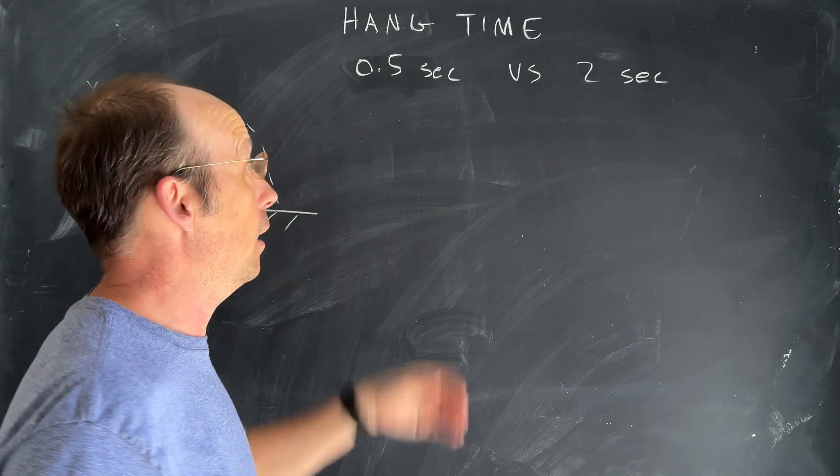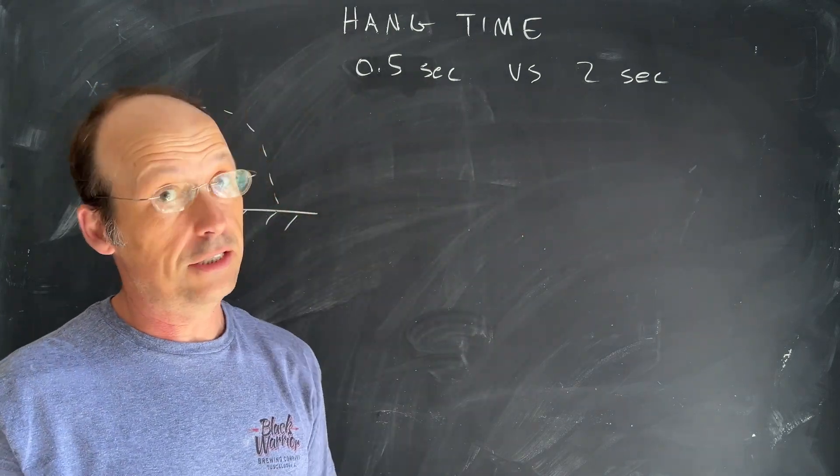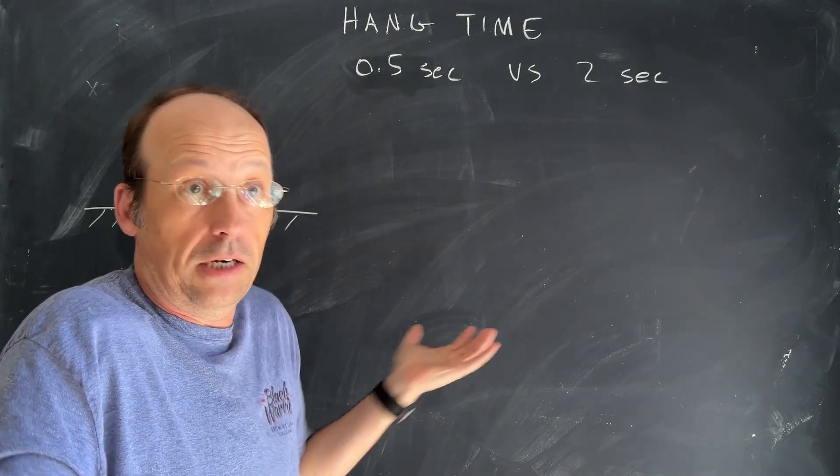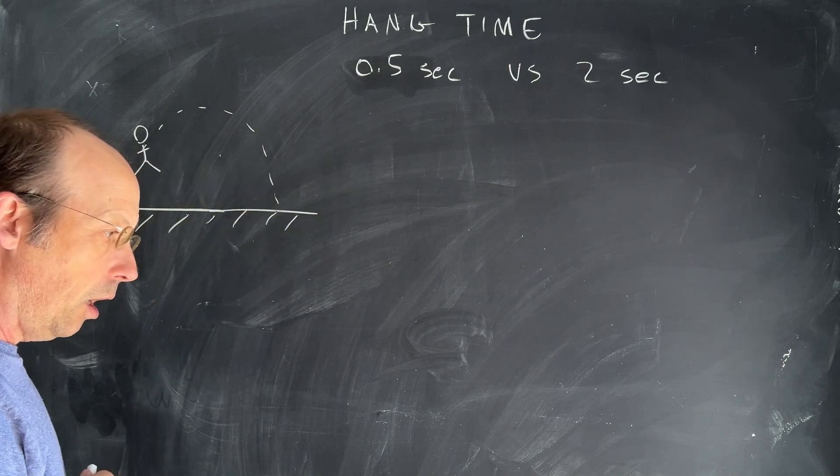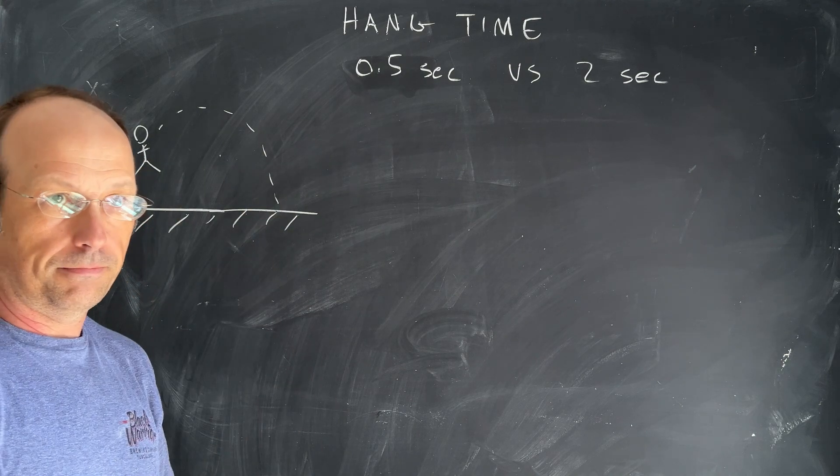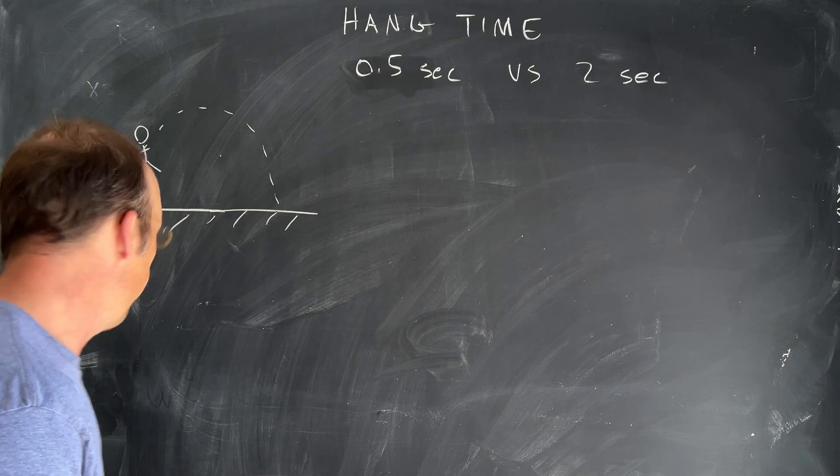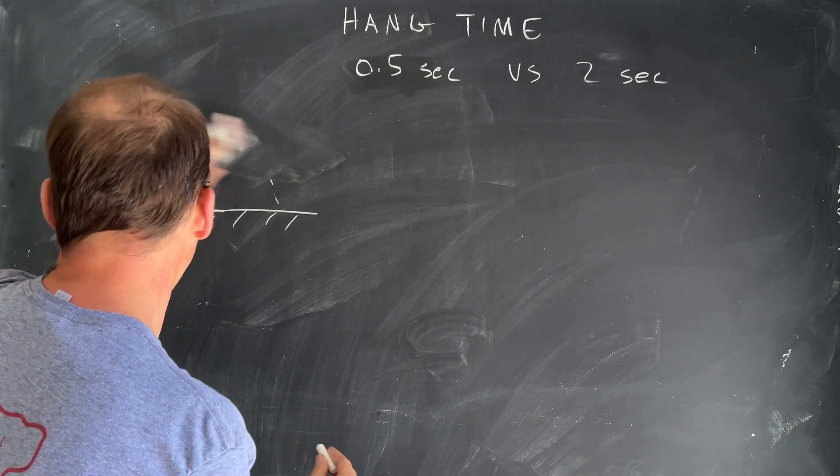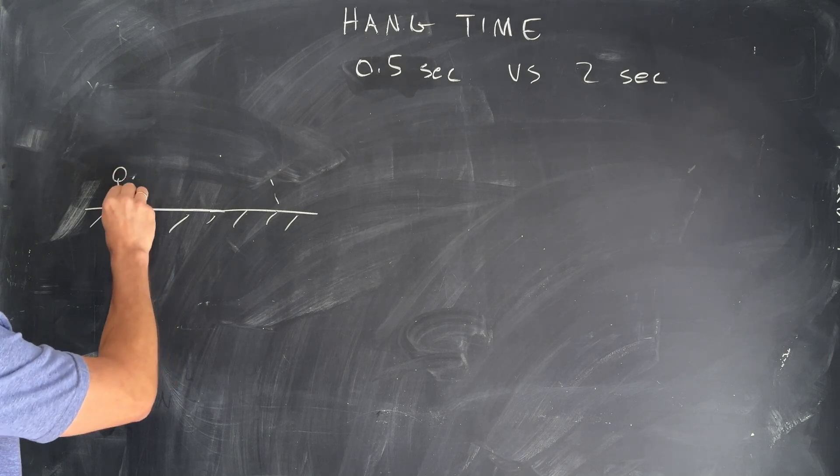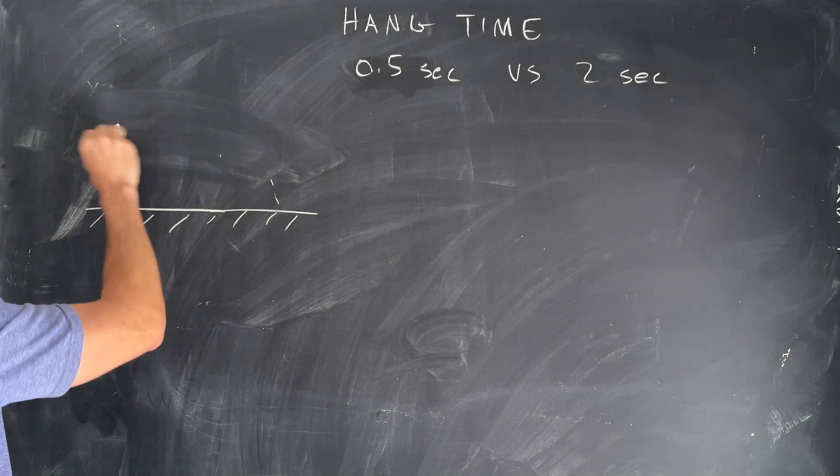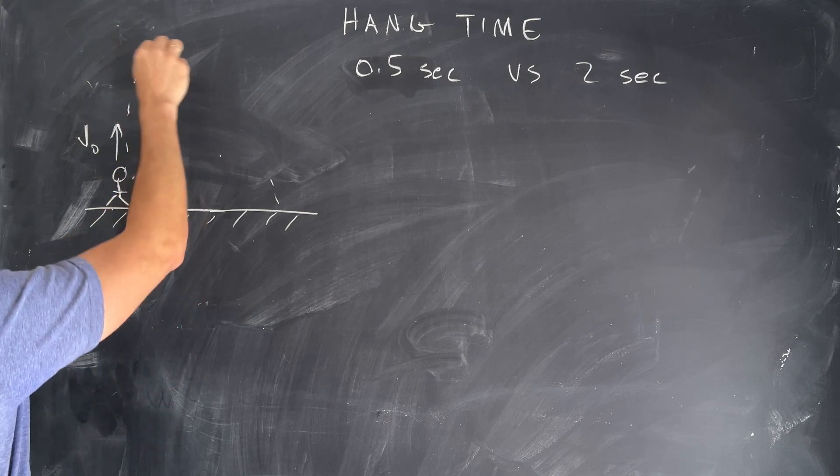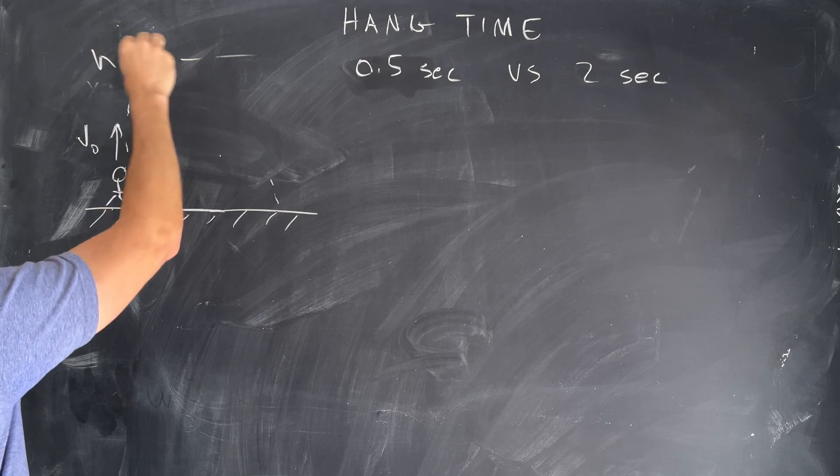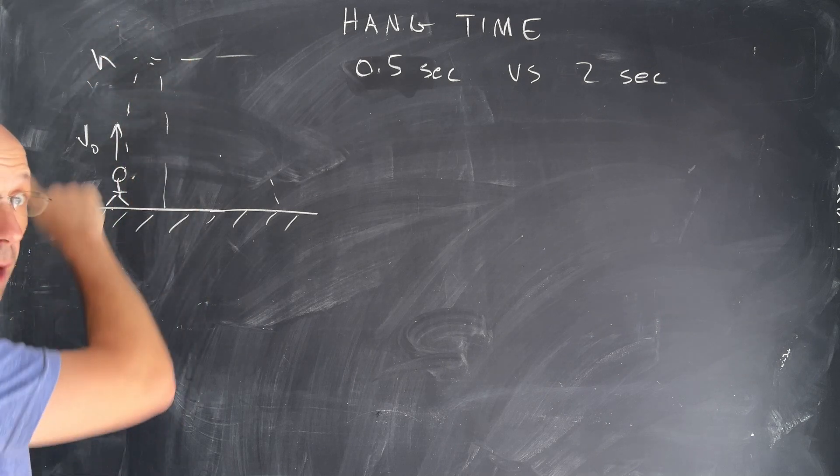So let's do this problem. Let's find out how high they go for 0.5 and two seconds. And let's just see what happens. So here's the jumper. Now, I'm going to assume they jump straight up. So they're going to start right here. They're going to jump up with some initial velocity v zero. They're going to go up to a height h. And then they're going to come back down. But the time is for the total time.